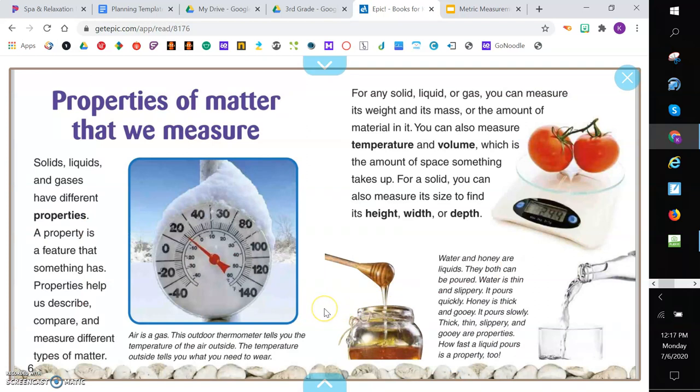Properties of matter that we measure. Solids, liquids, and gases have different properties. A property is a feature that something has. Properties help us describe, compare, and measure different types of data. For any solid, liquid, or gas, you can measure its weight and its mass, or the amount of material in it. You can also measure temperature and volume, which is the amount of space something takes up. For a solid, you can also measure its size to find its height, width, and depth.